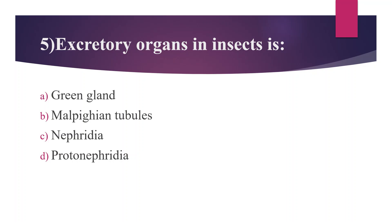Fifth Question: Excretory organs in insects. Option A: Green gland. Option B: Malpighian tubules. Option C: Nephridia. Option D: Protonephridia. Answer is Option B, Malpighian tubules — the excretory organ in insects. Other options: Green gland is the excretory organ of crayfish.